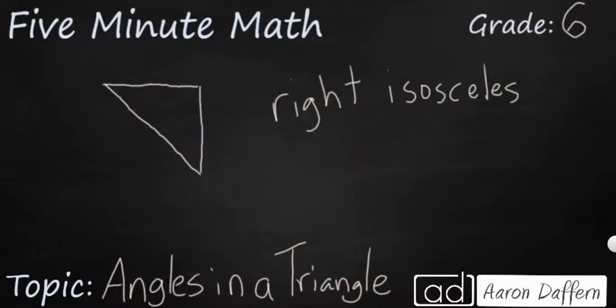Sometimes you'll be given a triangle like this and it will simply give you a description of the triangle. It will say it is a right isosceles triangle and it will ask you what is the measurement of one of these angles. And you might be thinking, well, I can't figure that out if I don't know the measurement of the other angle. But this right lets us know that this is a 90 degree angle. But this isosceles also tells us something. Remember, an isosceles triangle has two sides that are the same length.